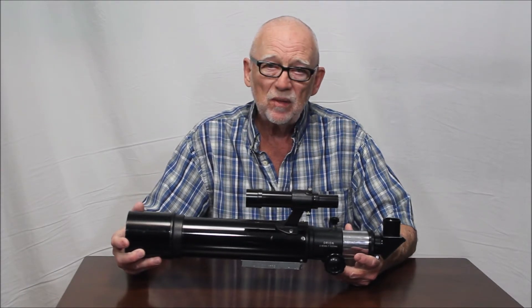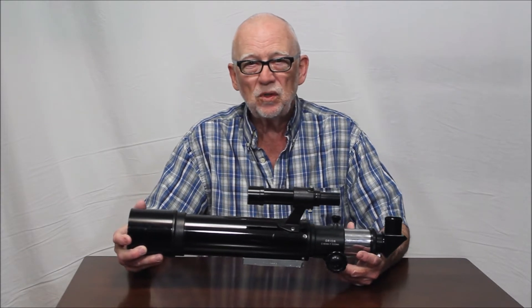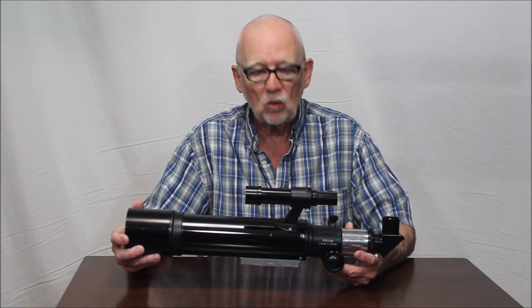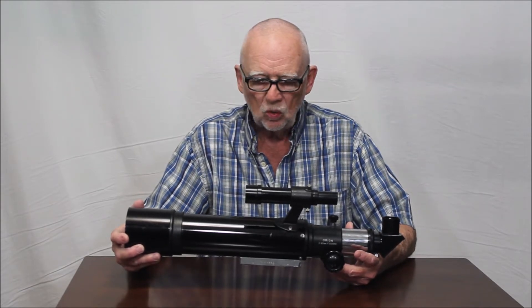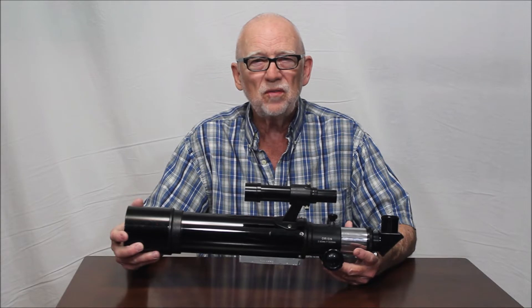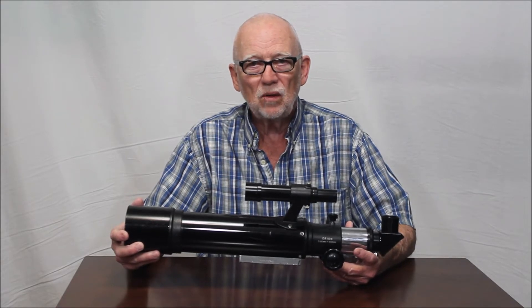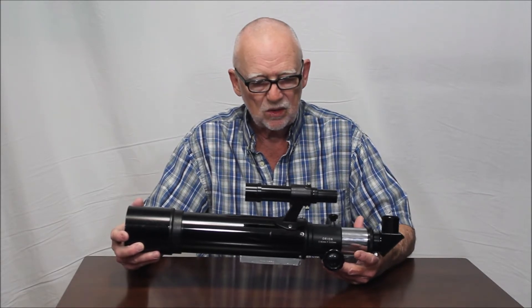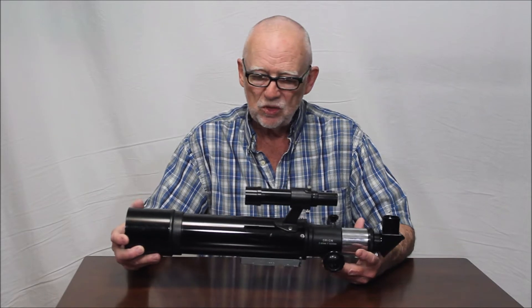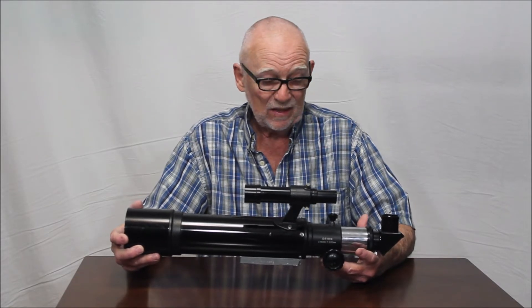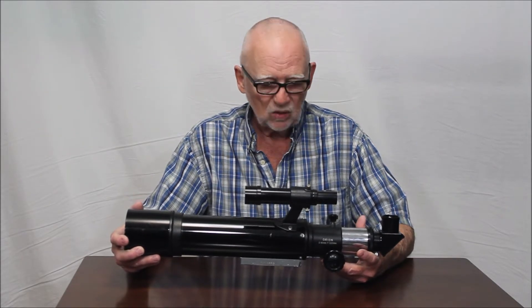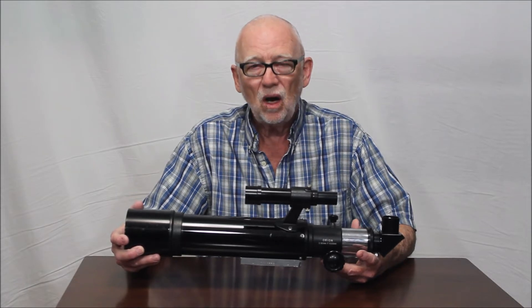This is an 80mm f6.25, about 500mm focal length. It was sold for just a very brief time, a couple of years, by Orion in the early 1990s. And the reason it's of interest to me is because I think, in all respects, it's identical to the Unitron RF80.